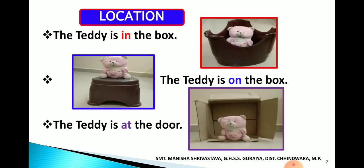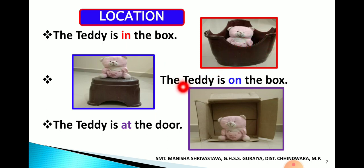Location बताने वाले words का visual example: यहां एक box है और box के अंदर एक teddy बैठा हुआ है — 'The teddy is in the box' — 'in' यानि box के अंदर. 'The teddy is on the box' — teddy और box दोनों का direct contact है, जहां direct contact है वहां 'on' का use करेंगे. 'The teddy is at the door' — 'at' particular point के लिए use किया जाता है. तो in, on, at — ये तीनों location बताने के लिए use किये गए हैं.